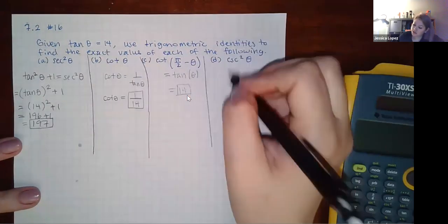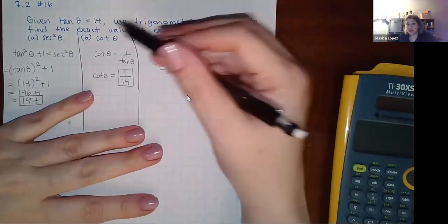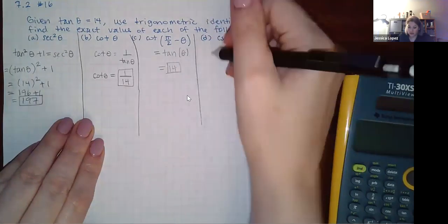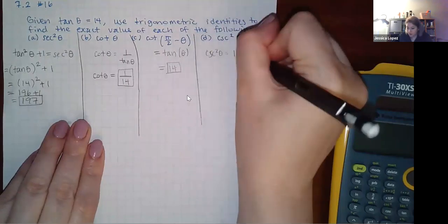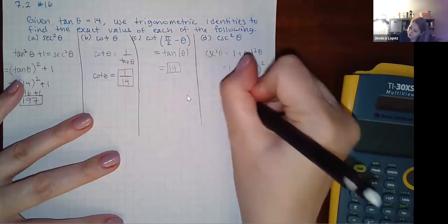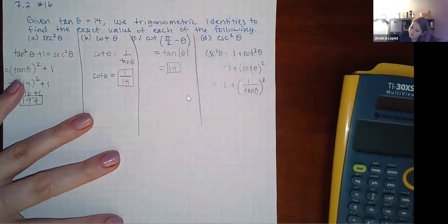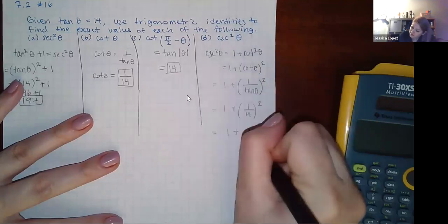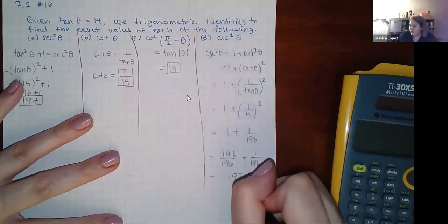For part (c), csc²θ: use the identity csc²θ = 1 + cot²θ. Rewrite cotangent as 1/tangent = 1/14, so cot²θ = (1/14)² = 1/196. Therefore csc²θ = 1 + 1/196 = 196/196 + 1/196 = 197/196.